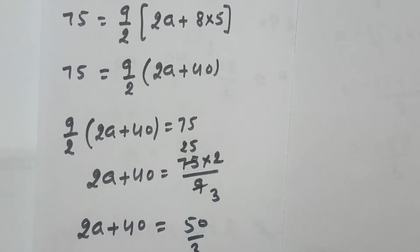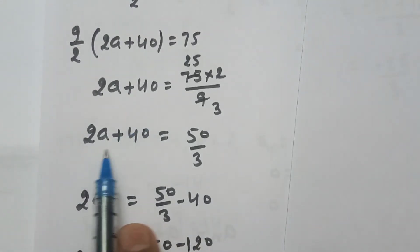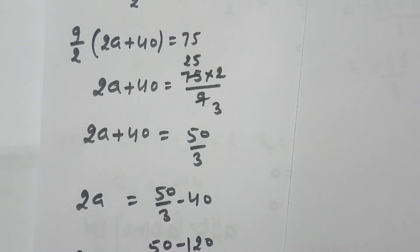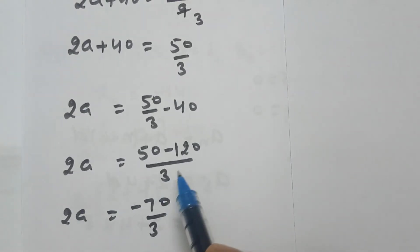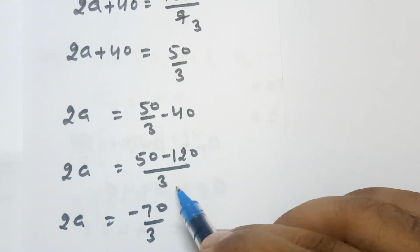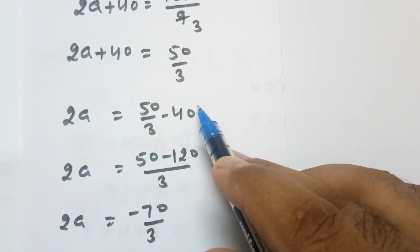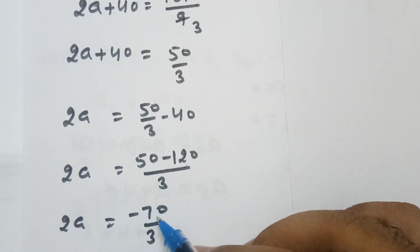After calculation, this becomes 50 by 3. Now 2a plus 40 — the 40 is a constant that goes to the right side. Since it was adding, it will subtract from 50 by 3. Taking LCM, the LCM is 3, so this becomes 50 minus 120 over 3. Since 40 by 1 multiplied by 3 gives minus 120. So 50 minus 120 equals minus 70.